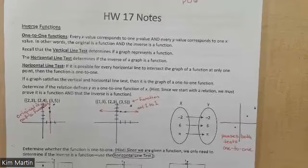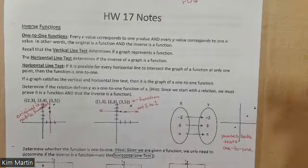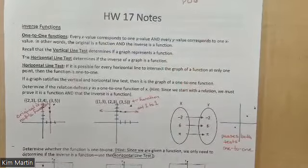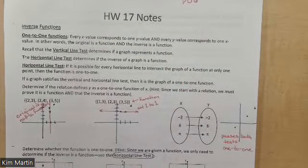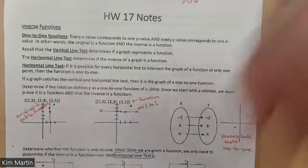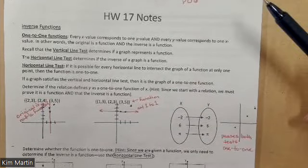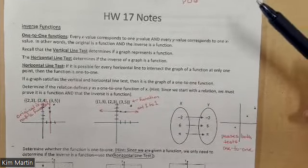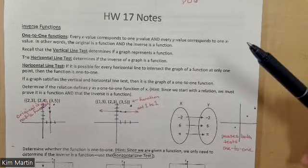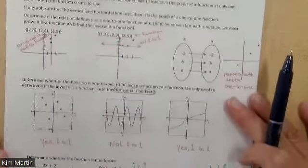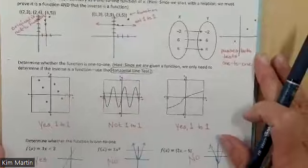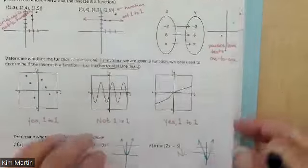On Monday we were doing Homework 17, which is about inverses. The original function has to be a function and it needs to be one-to-one in order to have an inverse, which means it needs to pass a horizontal line test. The vertical line test tests for function or not; the horizontal test tests for one-to-one. If it is one-to-one, then it has an inverse.